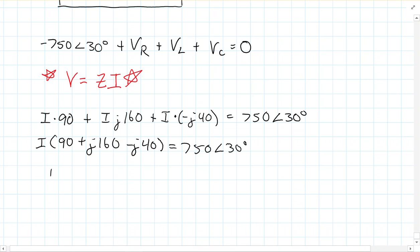Which, we have I is then 90, plus J120, is equal to 750, at an angle of 30 degrees. Now, at this point, again, we have to make the decision on whether to go polar form, or to go rectangular form. Since I'm going to be dividing here, I'm going to go ahead and just convert the left-hand side to polar form.